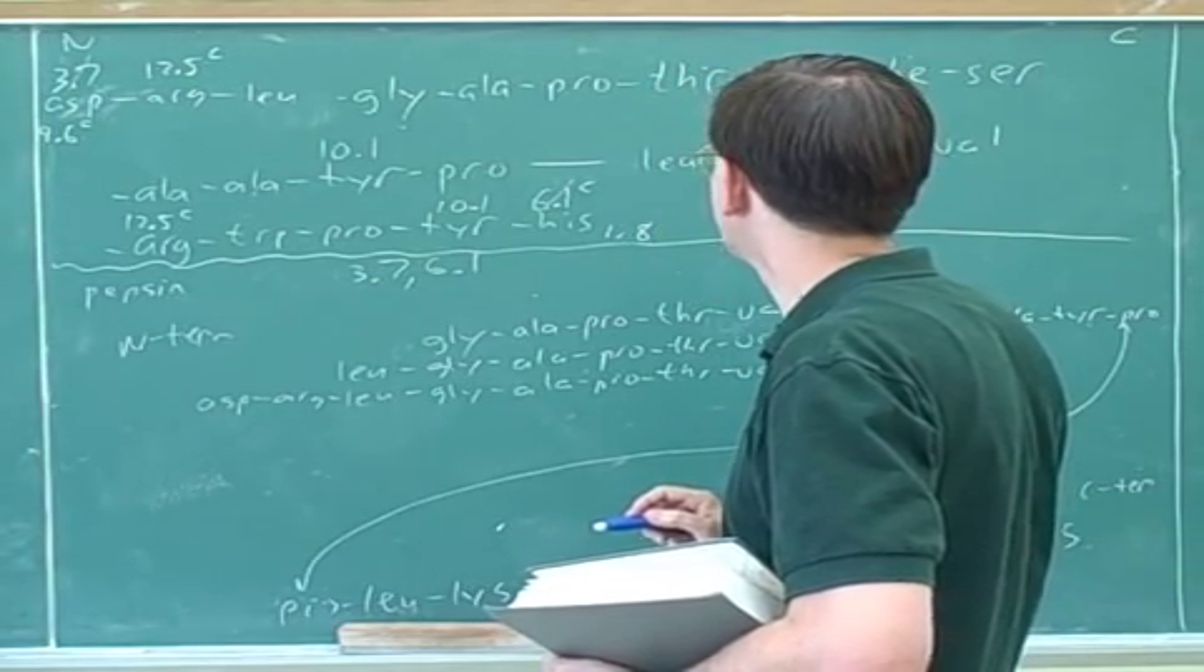Now we should figure out the charge when this is completely protonated. So now there's two things we have to do. One thing we have to do is list all the pKa's in order. So the smallest pKa here was 3.7. And then we have 6.1. Don't we have 1.8 to begin with? Oh, good. Thank you. 1.8 should go at the start. 6.1, 9.6, 10.1, 10.1, 10.5, 12.5, 12.5.